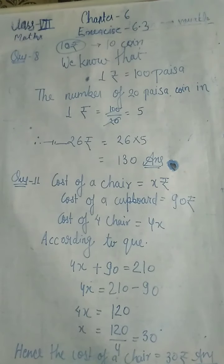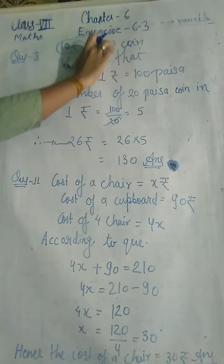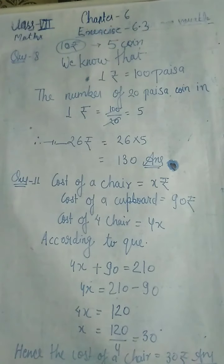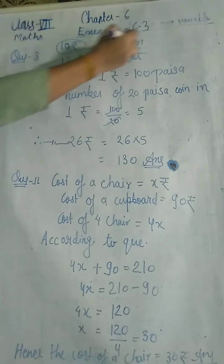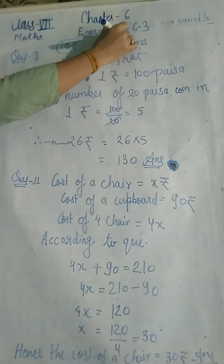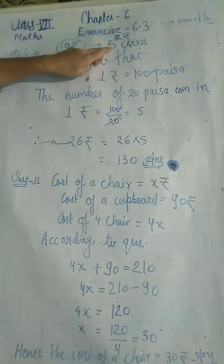Same as it is — aise hi. Agar maine bola ki aapke purse mein 10 rupees hain aur yeh 2 rupees ka jo coin aata hai uske form mein hai, toh 2 rupees ke kitne coins honge aapke purse mein? 5. Count kar lena — yeh aap daily use karte ho. 10 rupees mein 5 coins honge 2-rupees ke.